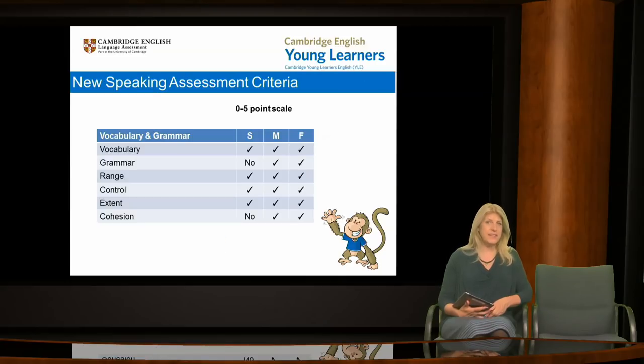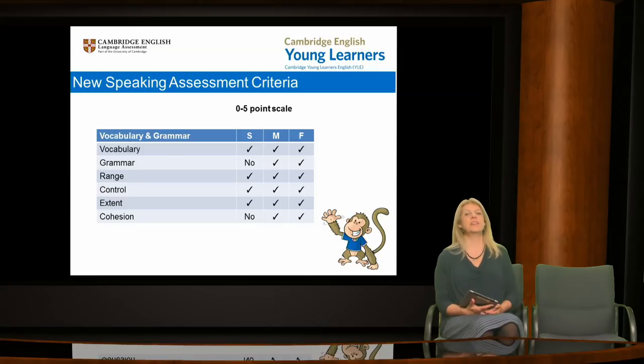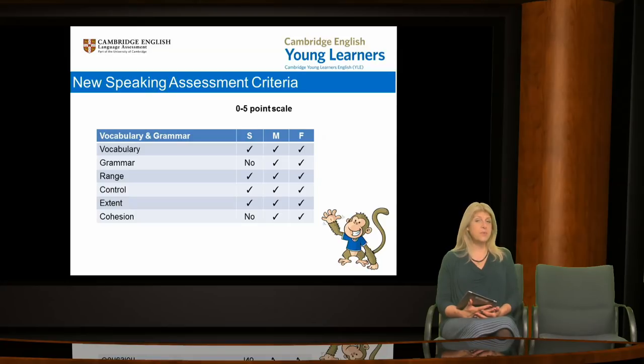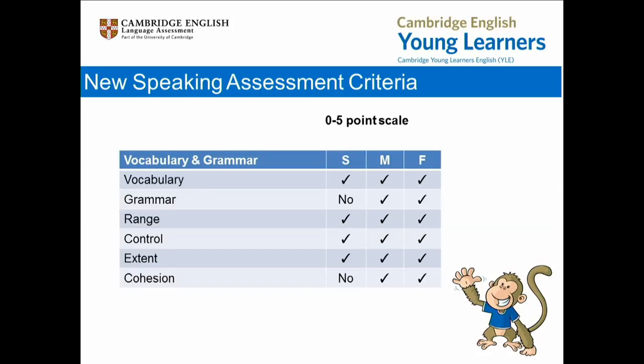In this final part of the webinar, let's look at the new speaking assessment criteria. Currently, candidate speaking is assessed on a three-point scale. The scale has been widened as part of the revision and from 2018, candidates will be scored on a scale from 0 to 5. This will enable examiners to be more precise in their grading and this also replicates scales at Key, Preliminary and First Certificate. Candidate speaking will be assessed across three main criteria: vocabulary and grammar, pronunciation and interaction.